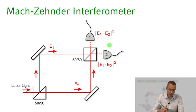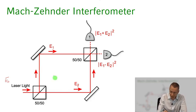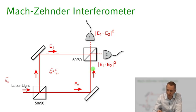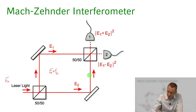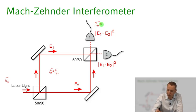When we have laser light coming in with field E0, we split it into two paths, so the total light field in the interferometer is a superposition E1 plus E2. When we reach the second beam splitter, we take the field arriving from one direction and the field arriving from the other direction — those two waves overlap, so the intensity on detector one is proportional to |E1 + E2|².